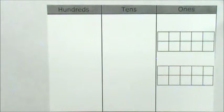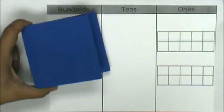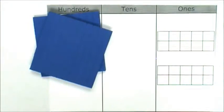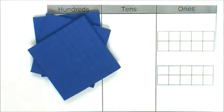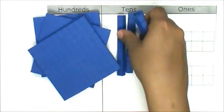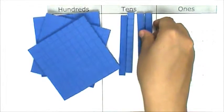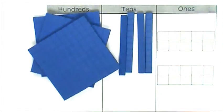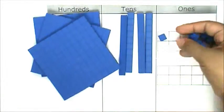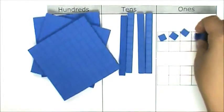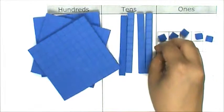346 is composed of 3 hundreds: 1, 2, 3; 4 tens: 1, 2, 3, 4; and 6 ones: 1, 2, 3, 4, 5, 6.